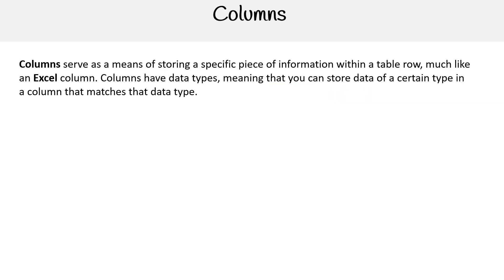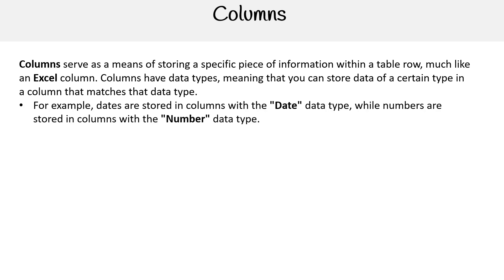Columns serve as a means of storing a specific piece of information within a table row, much like an Excel column. Columns have data types, meaning that you can store data of a certain type in a column that matches that data type. For example, dates are stored in columns with the date data type, while numbers are stored in columns with the number data type.